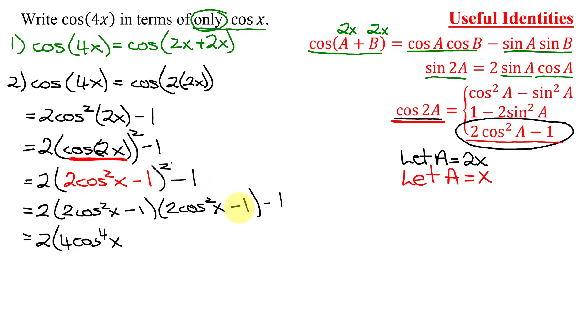2 cosine squared x times negative 1 is negative 2 cosine squared x. Negative 1 times 2 cosine squared x is negative 2 cosine squared x. And last, negative 1 times negative 1 is positive 1. Close the parentheses and then don't forget the negative 1 on the end.